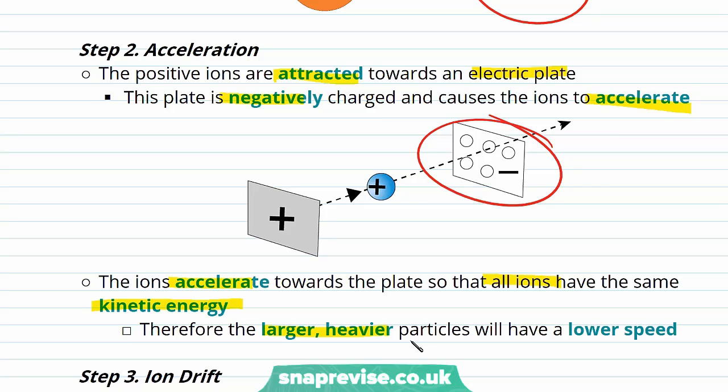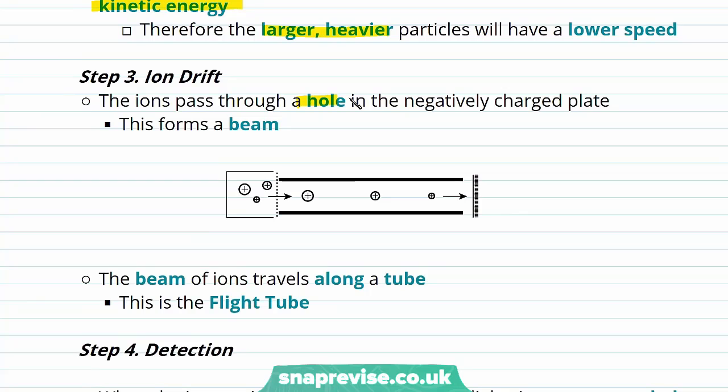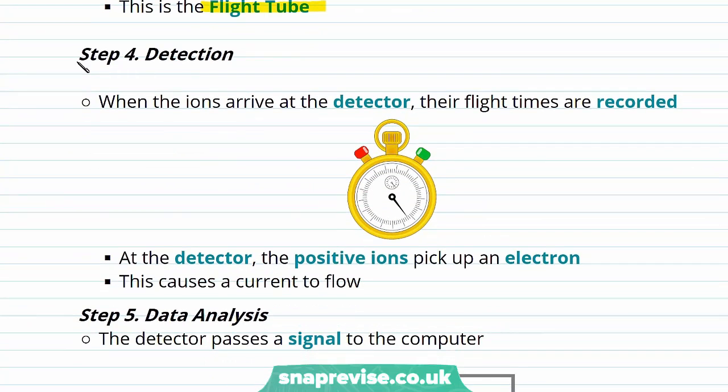After our ions have been accelerated, they pass through a hole in that negatively charged plate. This forms them into a beam and the beam of ions that we've formed travels along a tube, the flight tube that we took a look at earlier. After our ions travel down the tube, they reach our detector.